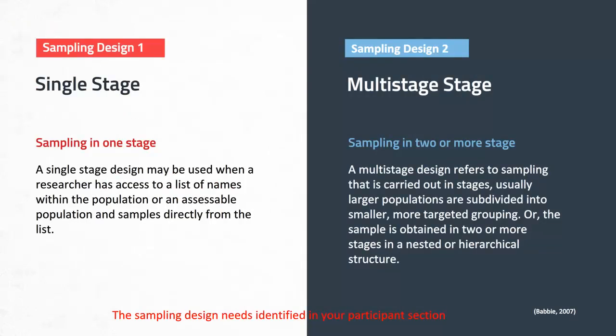We're just getting started on what needs to be included in a participant section for a proposal or research plan. We're now going to move on to sampling design. In a participant section, you need to include sampling design. There are two main sampling designs: a single stage and a multiple stage. A single stage design consists of one stage — it may be used when a researcher has access to a list of names within a population or accessible population and plans to sample directly from that list.